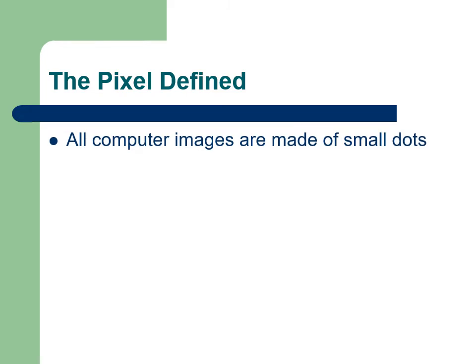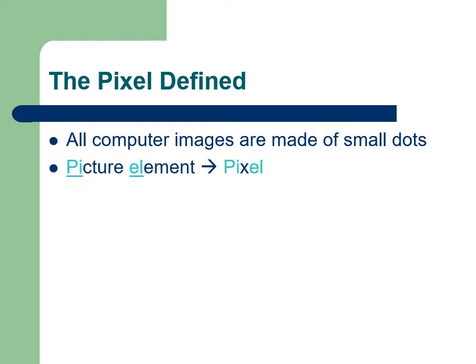The term pixel is derived from the first two letters of the word picture and the word element. Take the PI from picture and the EL from the word element and add an X to tie the word fragments together.